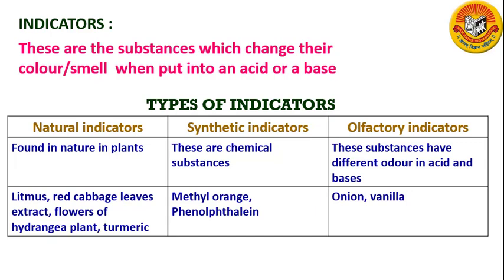Synthetic indicators, again as the name suggests, these are chemical substances. Methyl orange, phenolphthalein, etc. are examples of synthetic indicators.